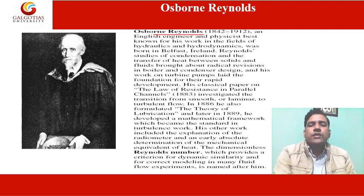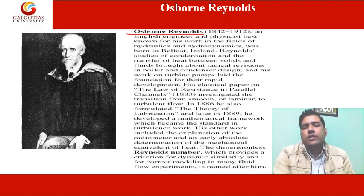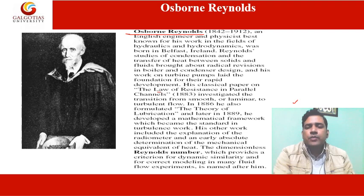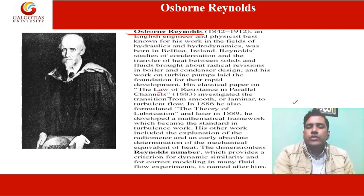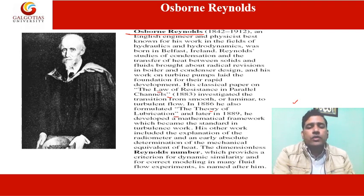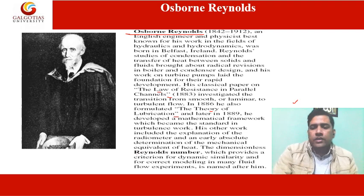Osborne Reynolds was the person who discovered the Reynolds number. His achievements are listed, including his paper on the law of resistance in parallel channels, where he investigated transition from laminar to turbulent flow. He also gave the theory of lubrication, and later in 1889 developed a mathematical framework that became standard in turbulent work. His other work includes experimental determination of the mechanical equivalent of heat.